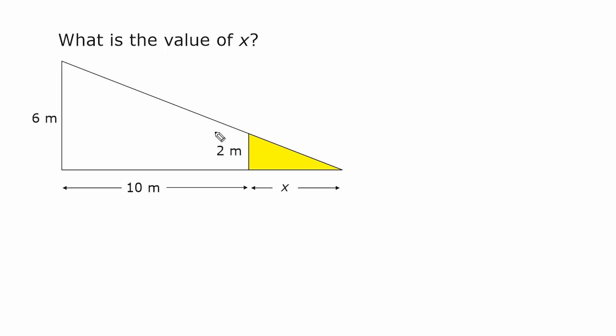Because these two triangles are similar to each other, we can set up a proportion to solve for this unknown value down here. Because this line segment right here corresponds to this line segment right here, I'm going to write 2 over 6.